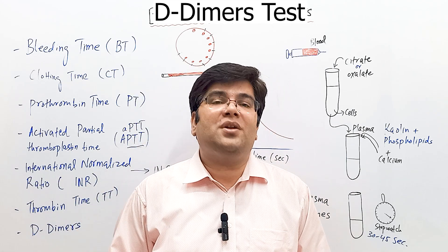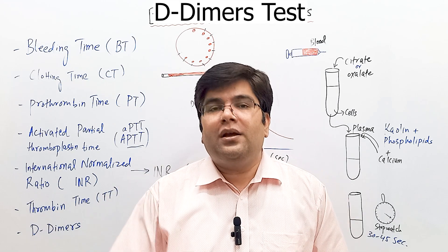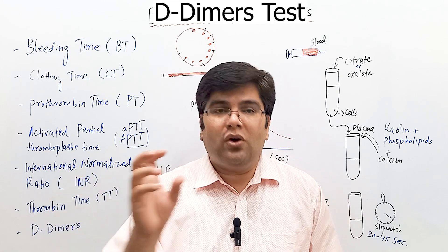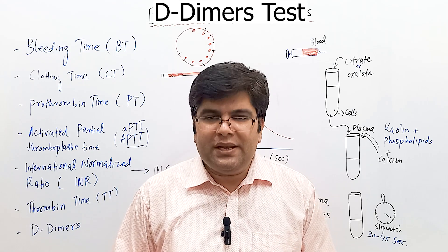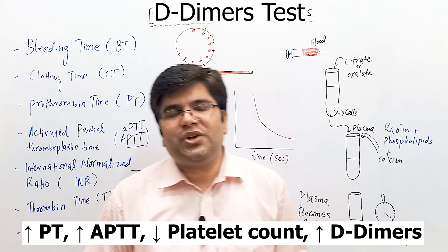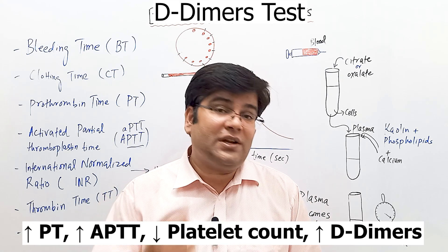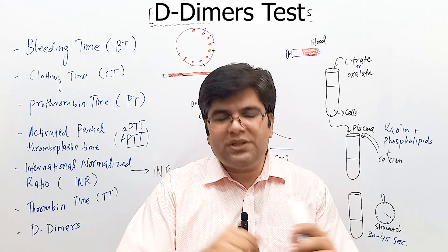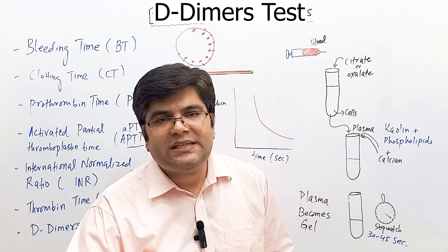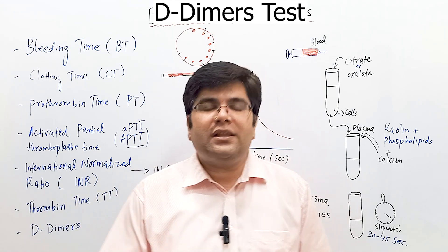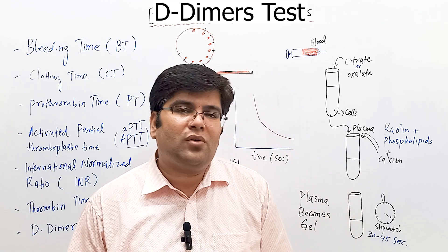Now here is an important MCQ question. A seriously ill patient with infection is admitted to the ICU. The blood coagulation profile shows raised prothrombin time, raised APTT, low platelet level, and increased D-dimers. What is the diagnosis? The options are hemophilia, thrombocytopenia, von Willebrand disease, DIC, or use of aspirin. The correct answer is DIC.